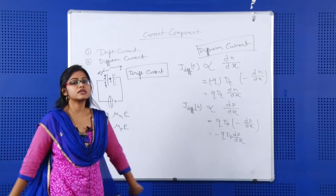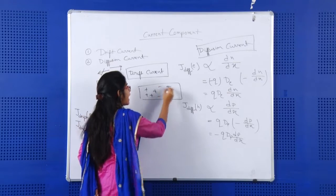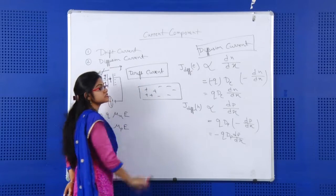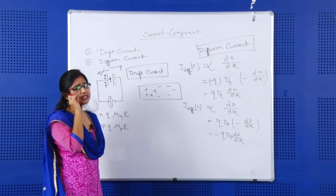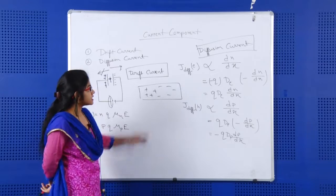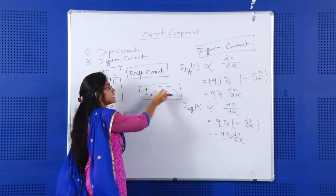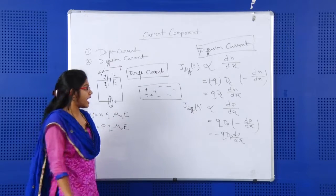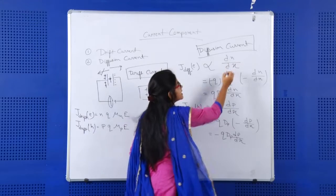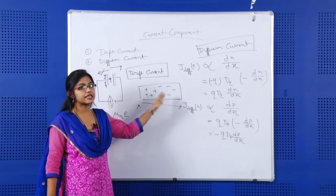The next one is diffusion current. Diffusion current occurs because of concentration variation. Suppose in a semiconductor device there are electrons and holes, but the concentration is not the same throughout the device. The concentration of holes is higher in one region rather than another region. Similarly for electrons — the concentration is higher in one region and very less in another region. So diffusion current flows only because of the concentration gradient. If there is a concentration variation of holes and electrons throughout the device, then only this current flows, and it is proportional to the concentration gradient dn/dx.